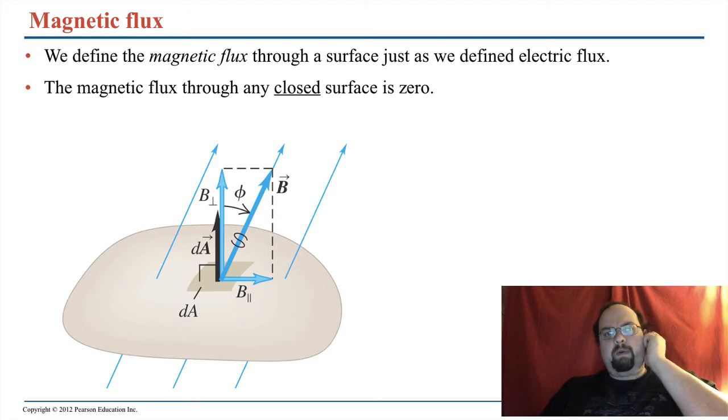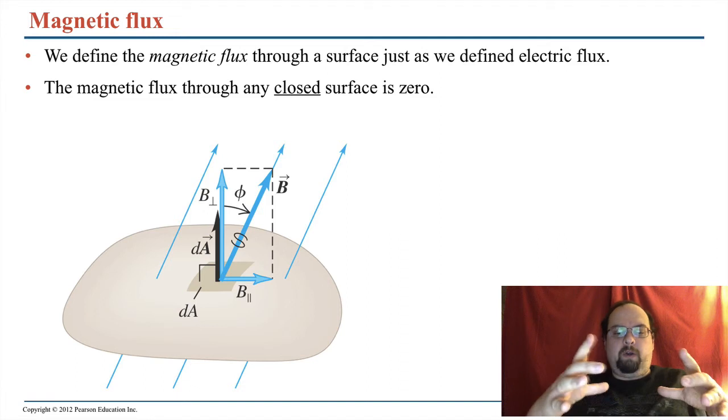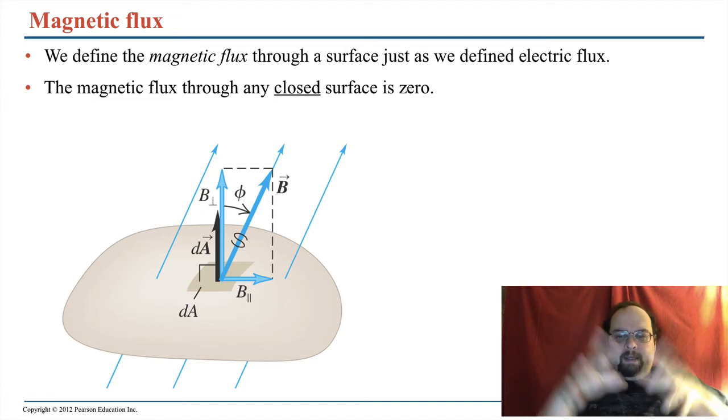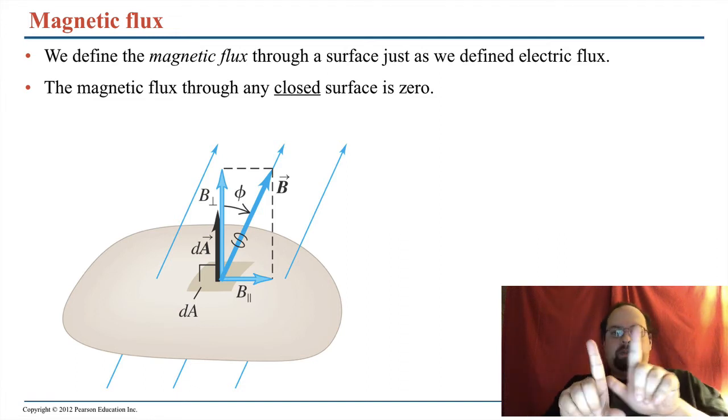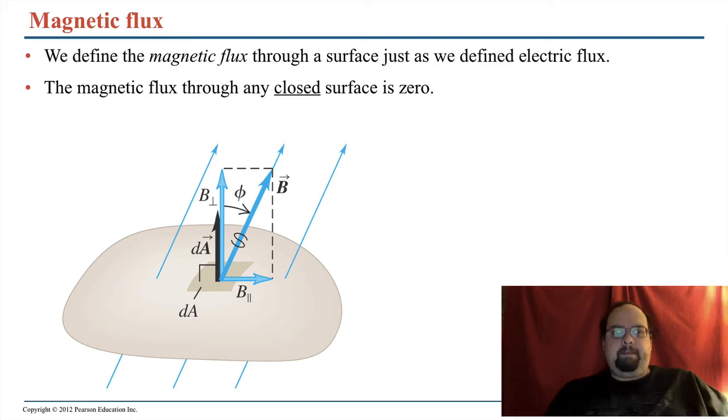But once again, we're looking for the cosine of the angle between dA and the magnetic field at every point. And dA, remember, is perpendicular to the surface, to the flat surface. If you go close enough to any shape, zoom in, it'll look flat locally. And so the angle between B and A and dA there.